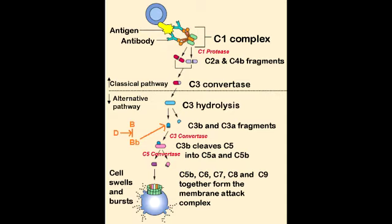You are left with C3b, which has to combine with something else. There is another plasma protein called Factor B. Factor B is going to get cleaved by Factor D, which will form Factor Bb. This Factor Bb will combine with the C3b we had left over, forming C3 convertase. This C3 convertase is different from the one in the classic pathway, because it is made up of C3b and Factor Bb.